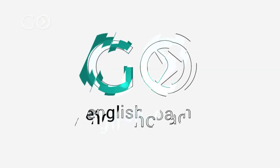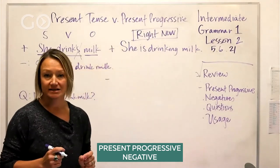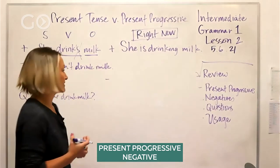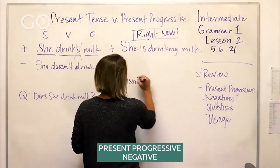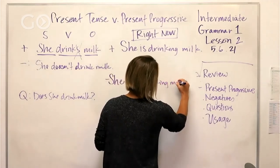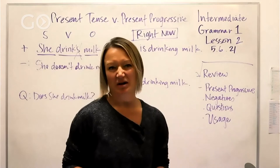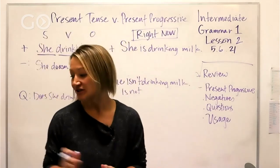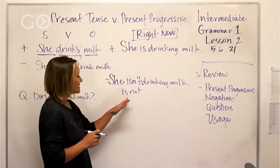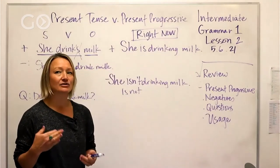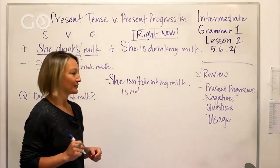That was the positive. Now let's look at the negative — how do we make this sentence in the present progressive negative? 'She isn't drinking milk.' Or: 'She is not drinking milk.' You might use the negative to contrast — she isn't drinking milk, she's drinking orange juice or coffee. We can separate the words to give more emphasis: 'She is NOT drinking milk,' really stressing that 'not.'